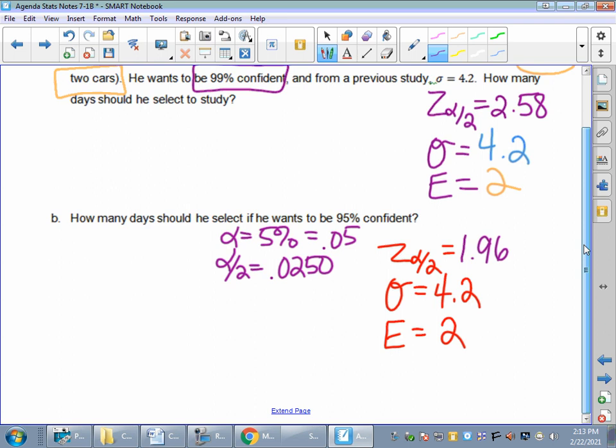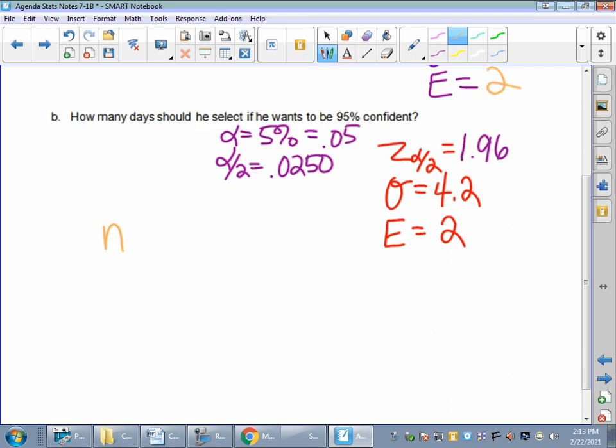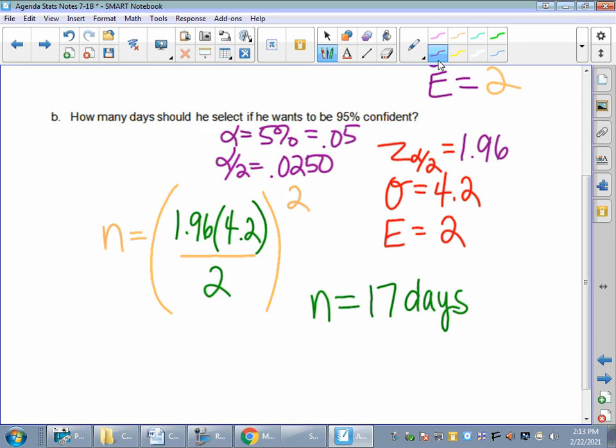So when we do this, then we're just going to use a 1.96 for the second problem from part B. So N is equal to giant squared. So my Z value, 1.96 times my standard deviation, divide by my margin of error. Don't forget to square at the end. So N should be equal to sample size. I believe it comes out to 17 days after I round up.